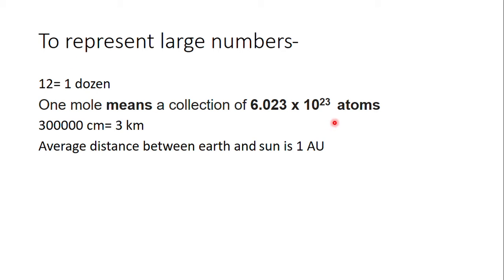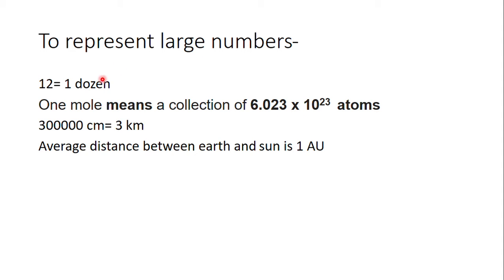Similarly, we know that atoms are so small — very, very small particles. So, if you just take 1 dot, there will be millions of atoms. So, if you have a number that is 6.023 into 10 power 23 atoms, we will call that number of atoms just 1 mole.